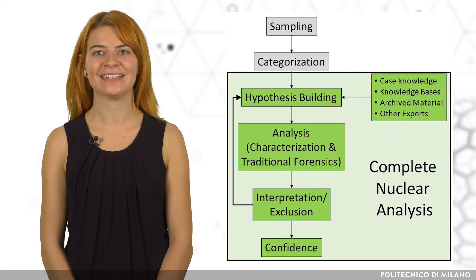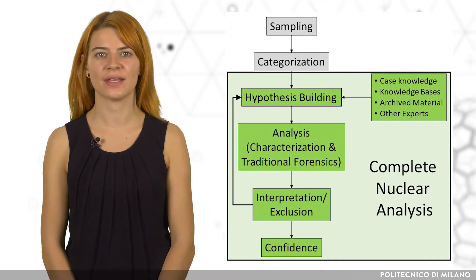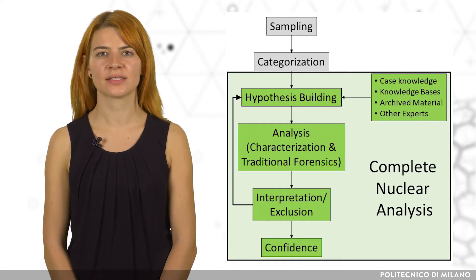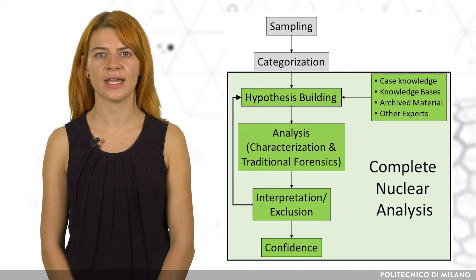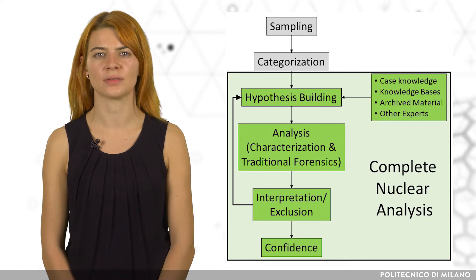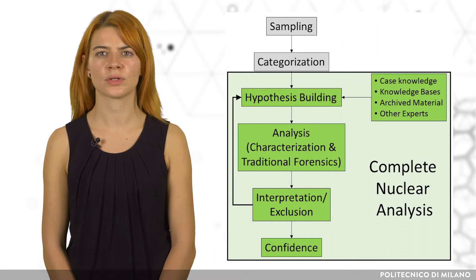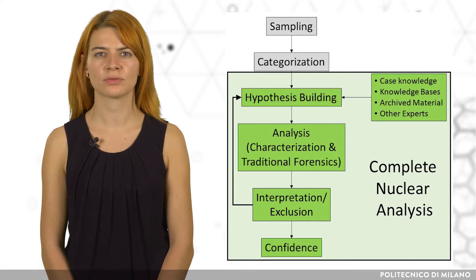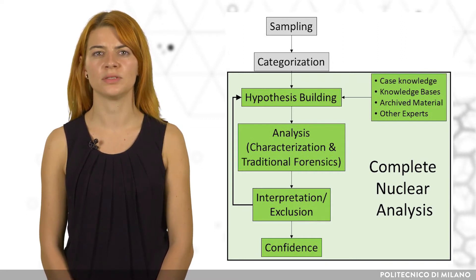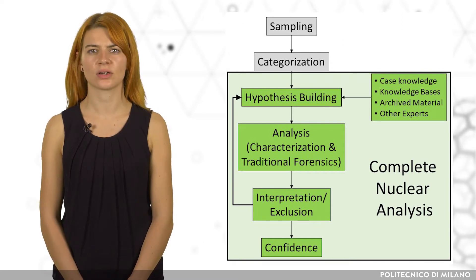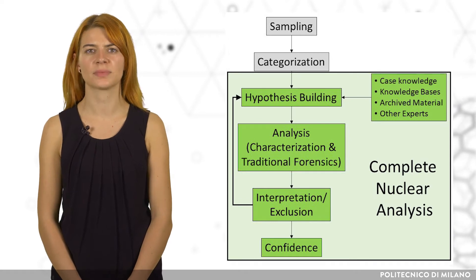A complete nuclear analysis includes more steps than the characterization of the material. Traditional forensics analysis techniques are also carried out, potentially including DNA examination or securing of fingerprints on the seized objects and their packaging. These results also contribute to the iterative process of data mining the origin, traffic route, and last legal owner of the material.